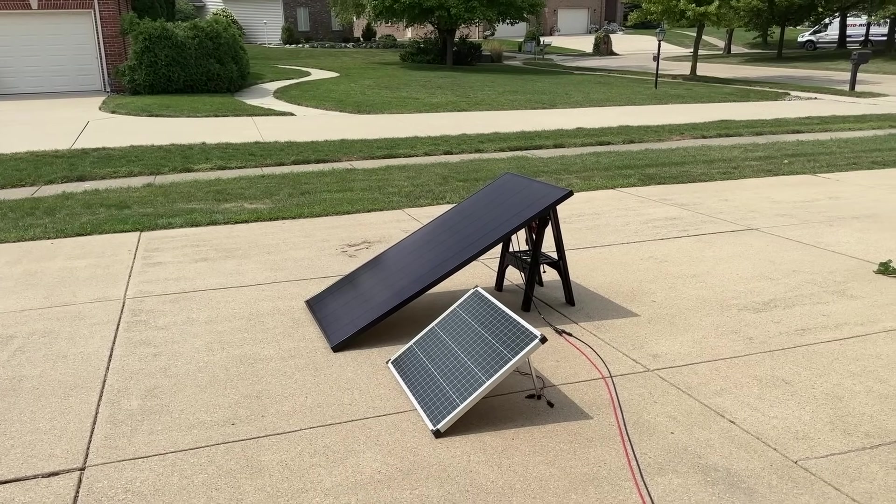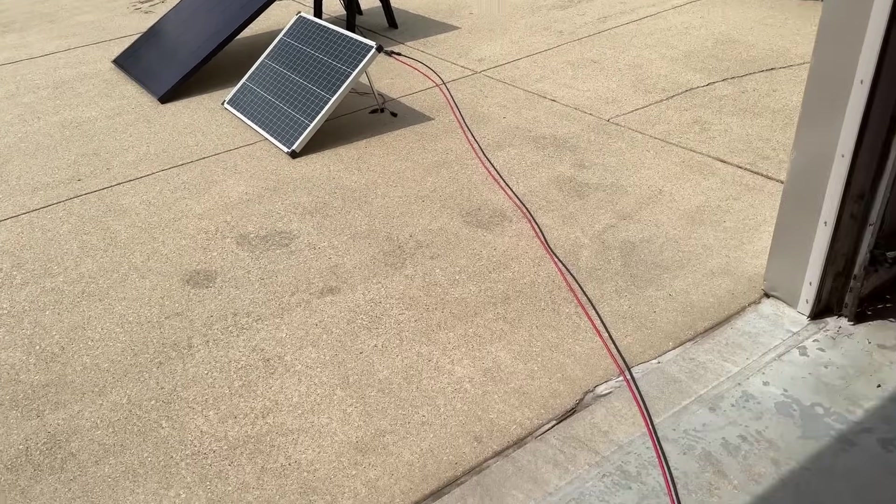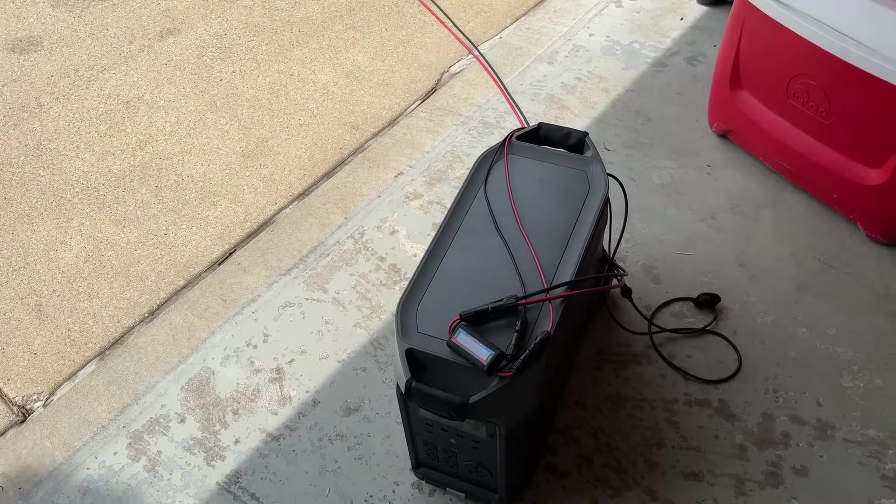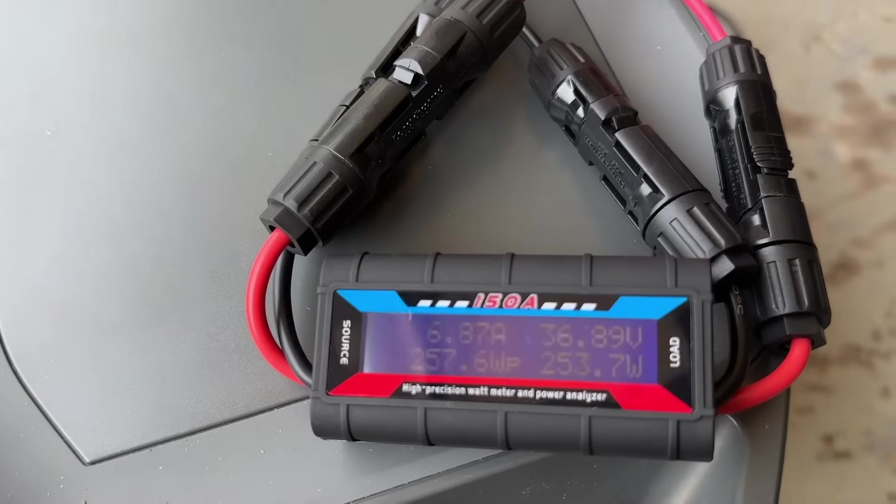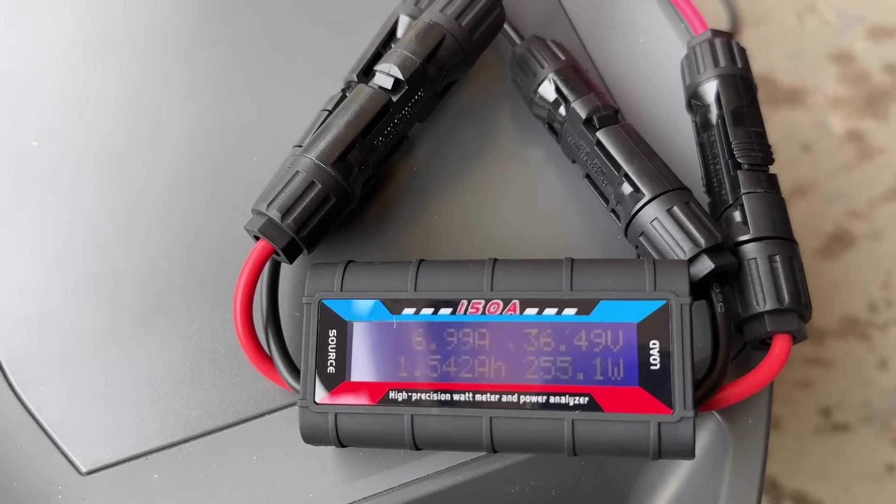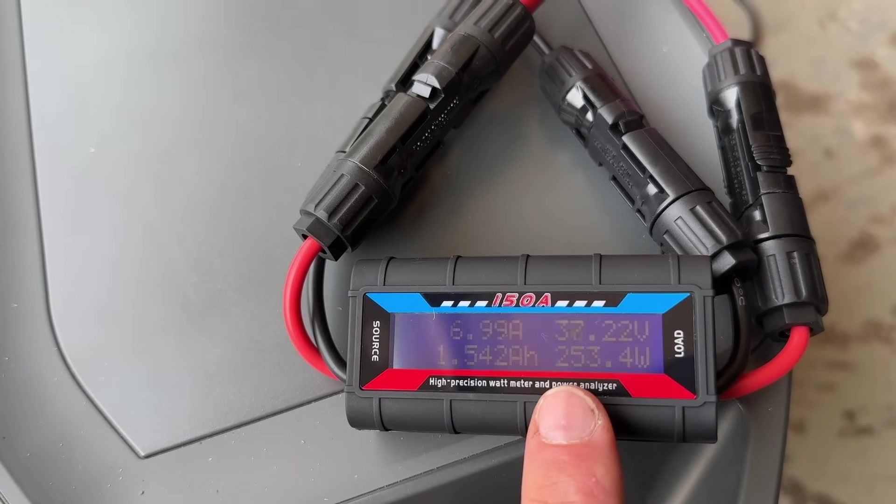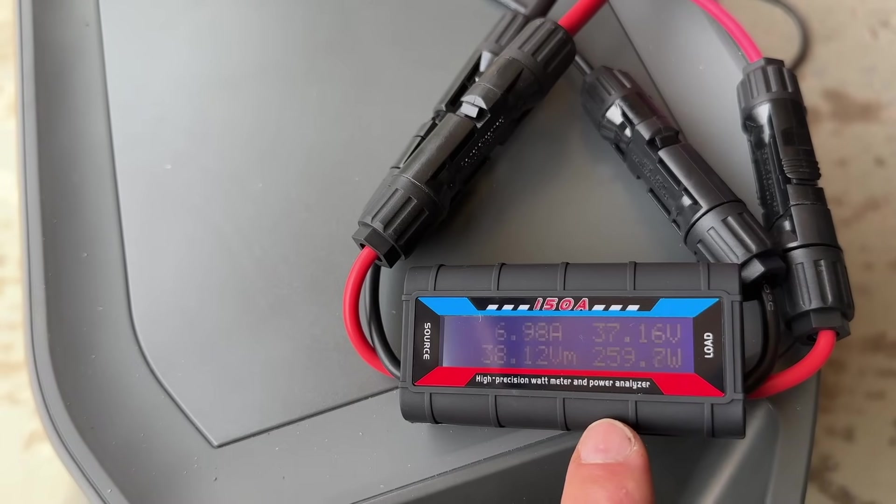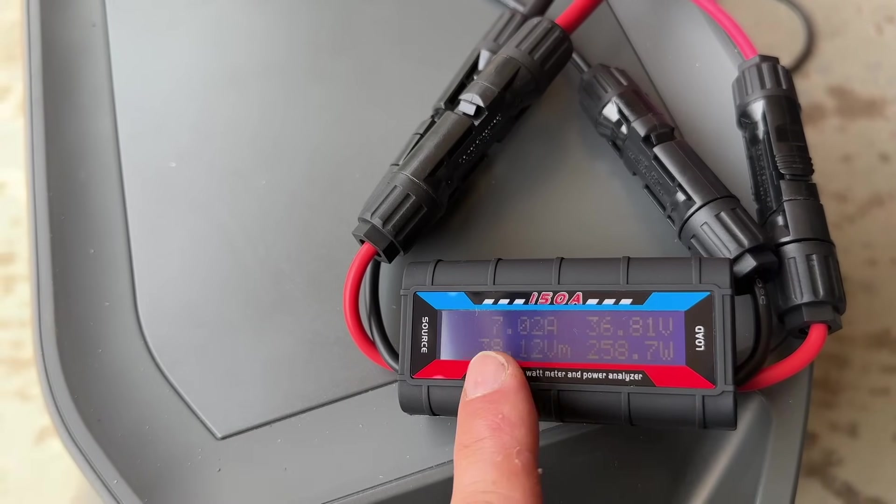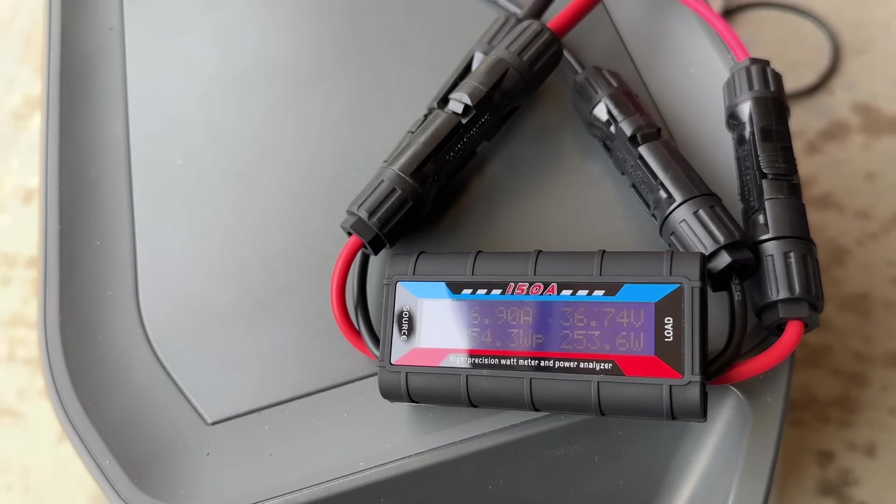First up, we are connected to that 360 watt Helium panel that is running into our EcoFlow Delta Pro and I have a little power analyzer here right before it goes in. It's a little hazy out so right now we're just getting 250 watts or so and that is a combination of about 37 to 38 volts and right around 7 amps for our larger panel.